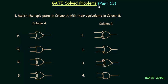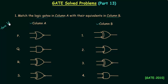Welcome to this part of gate solved problems. The first problem is taken from the GATE 2010 paper. In this problem we need to match the logic gates in column A with their equivalences in column B. All the eight gates are two-input gates and the two inputs are A and B.